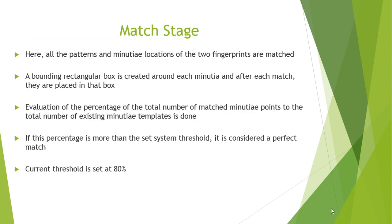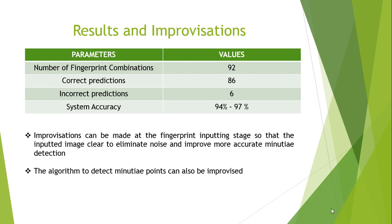Next, we come to the match stage. Here, all the patterns and minutiae locations of two fingerprints are matched. A bounding rectangular box is created around each minutiae, and after each match they are placed in that box. Next, we evaluate the percentage of the total number of matched minutiae points to the total number of existing minutiae templates. If this percentage is more than the set system threshold, then it is considered a perfect match. The current threshold is set at 80%. After designing the entire system and testing the functioning of each of the stages, the following results were obtained.